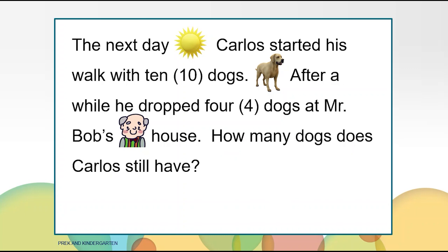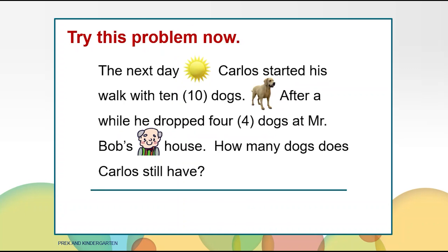What new information did we find out? We have a question — we get to figure out how many dogs does Carlos still have. Let's read the story problem again. The next day Carlos started his walk with ten dogs. After a while he dropped four dogs at Mr. Bob's house. How many dogs does Carlos still have? You may use your paper, crayons, pictures, numbers, words, or even your counters to show your thinking. I'll give you some time to work on this problem now.